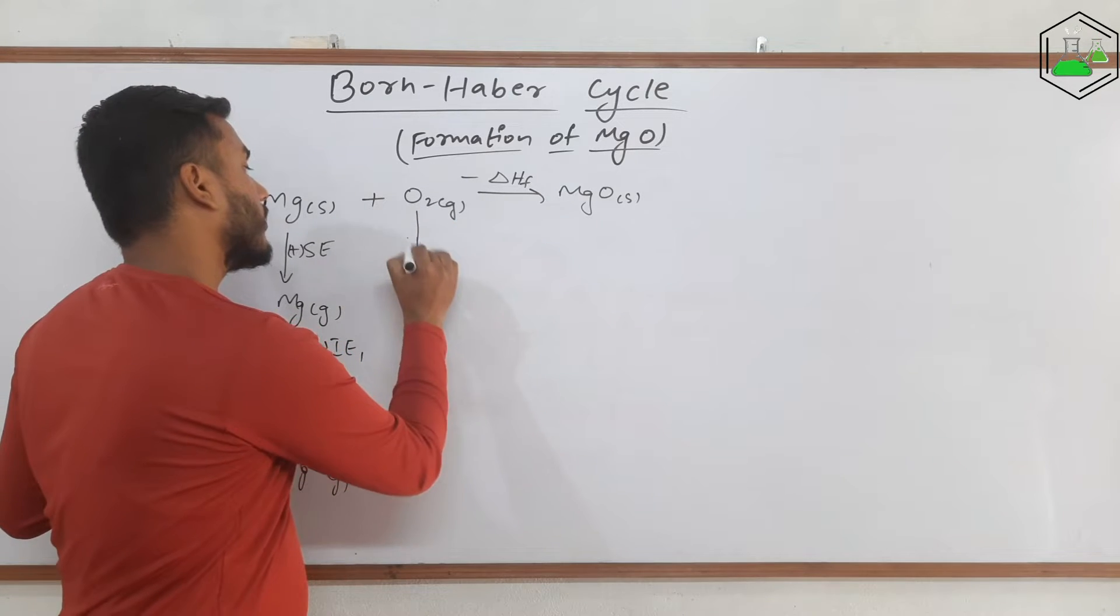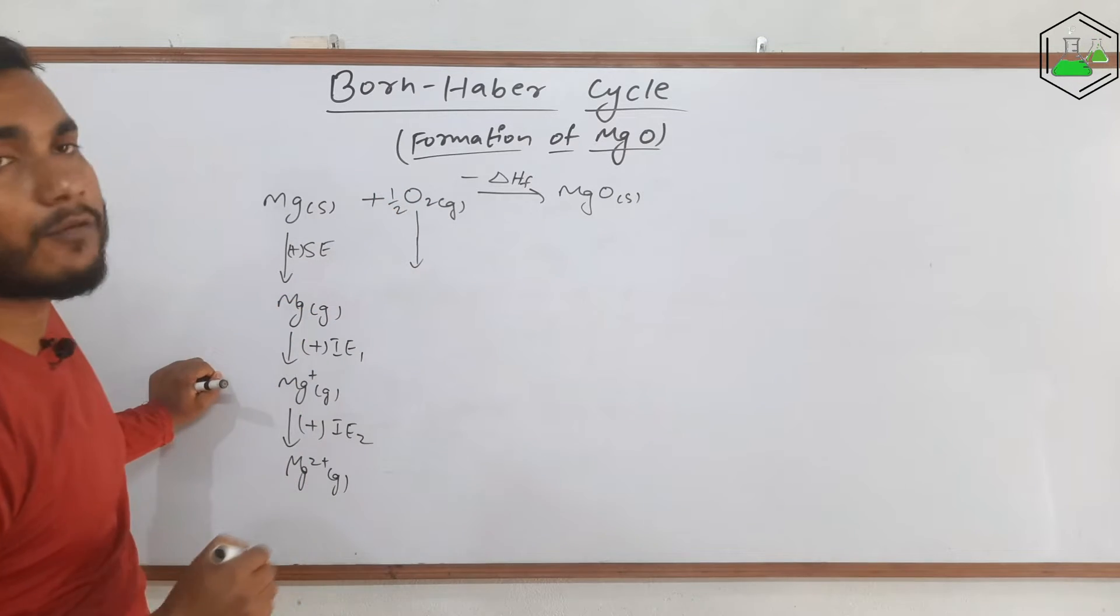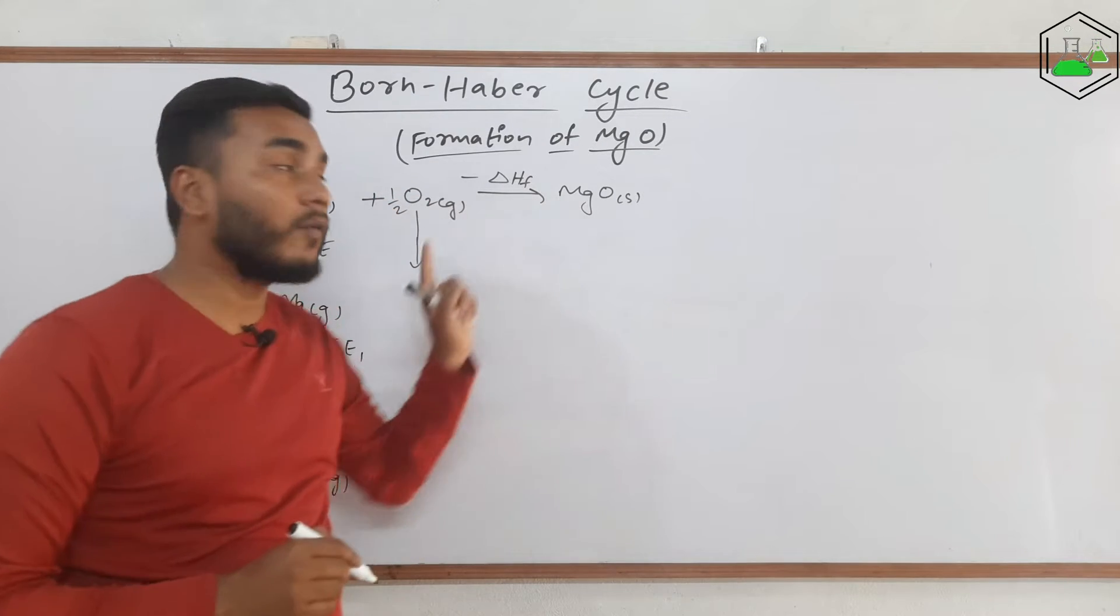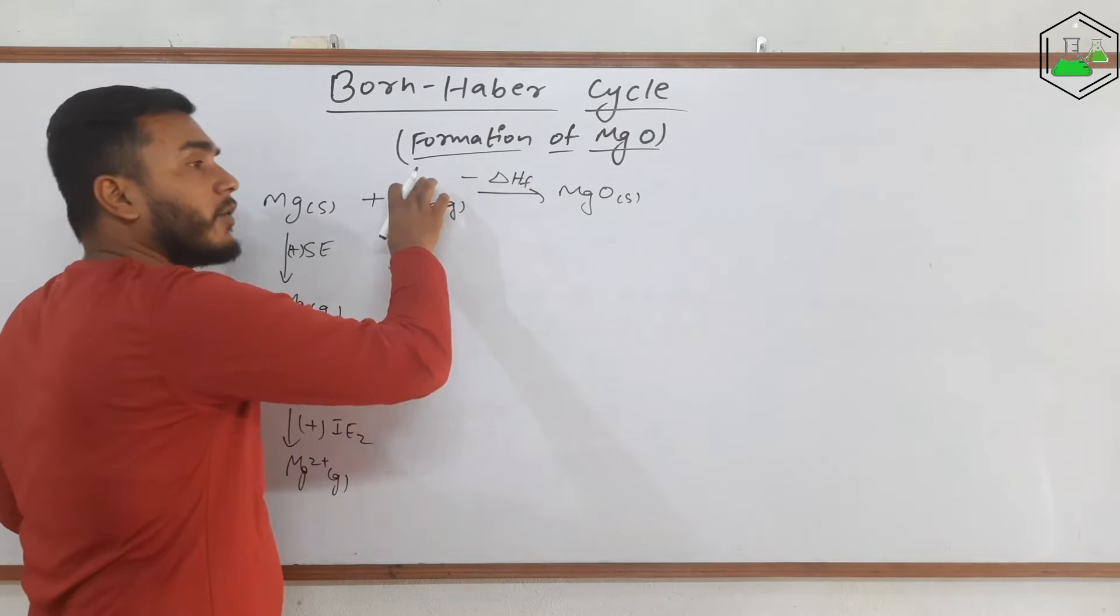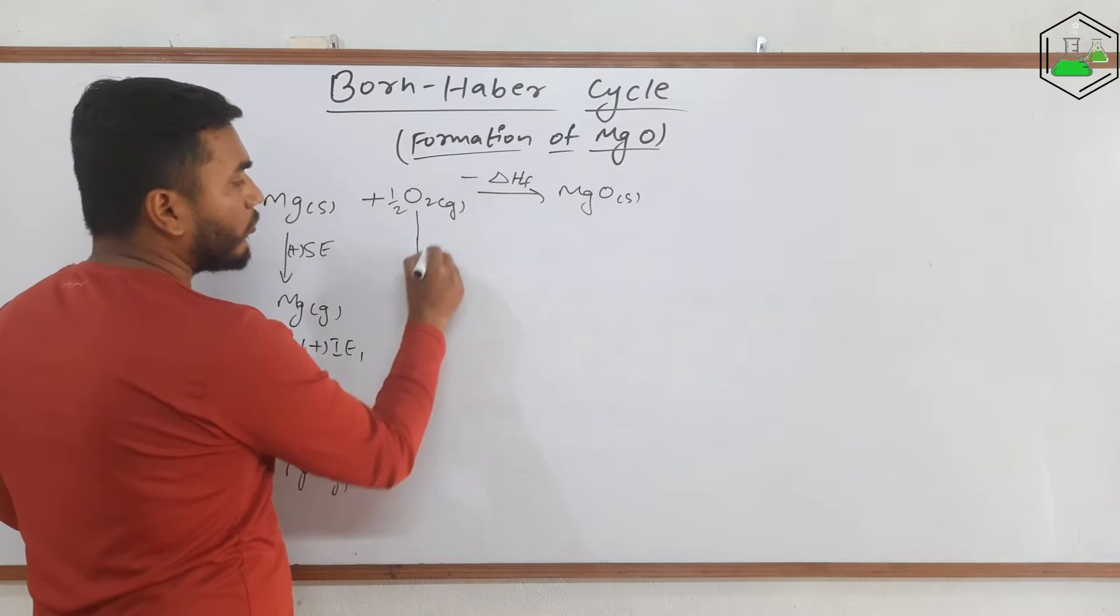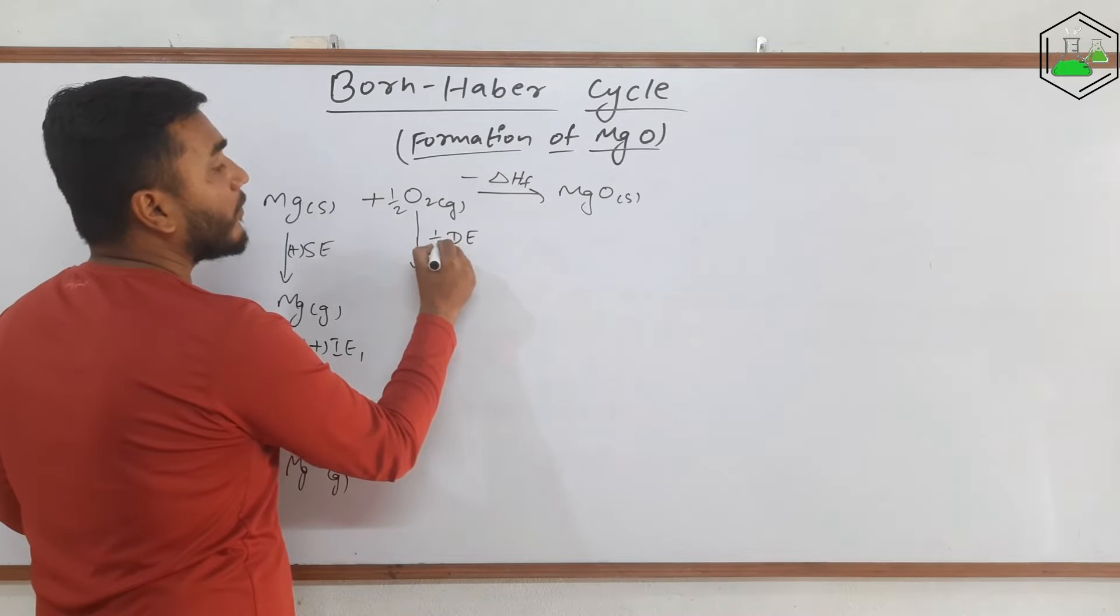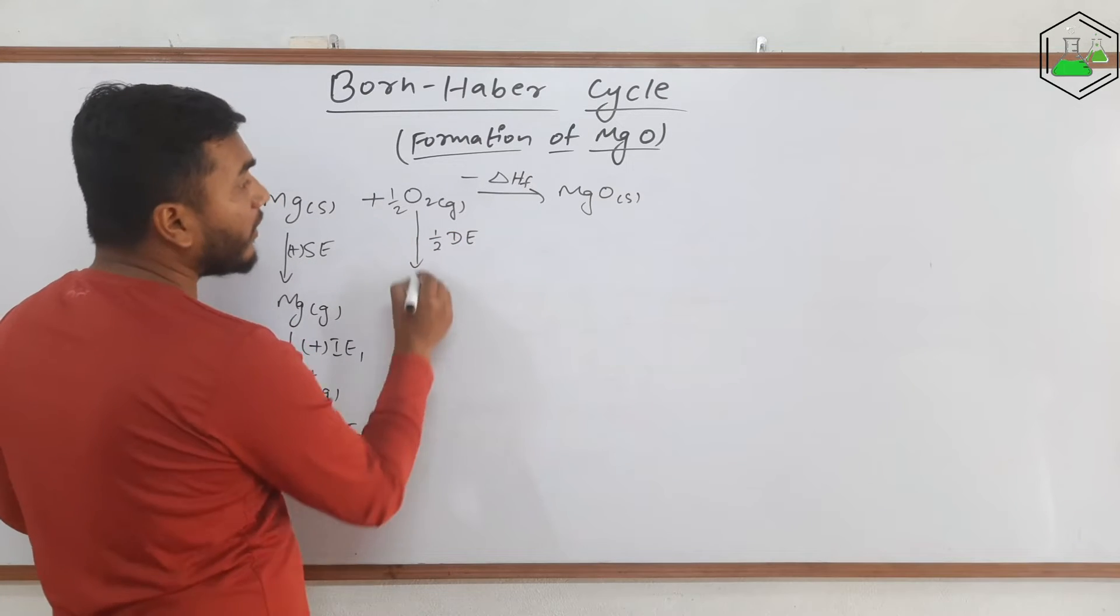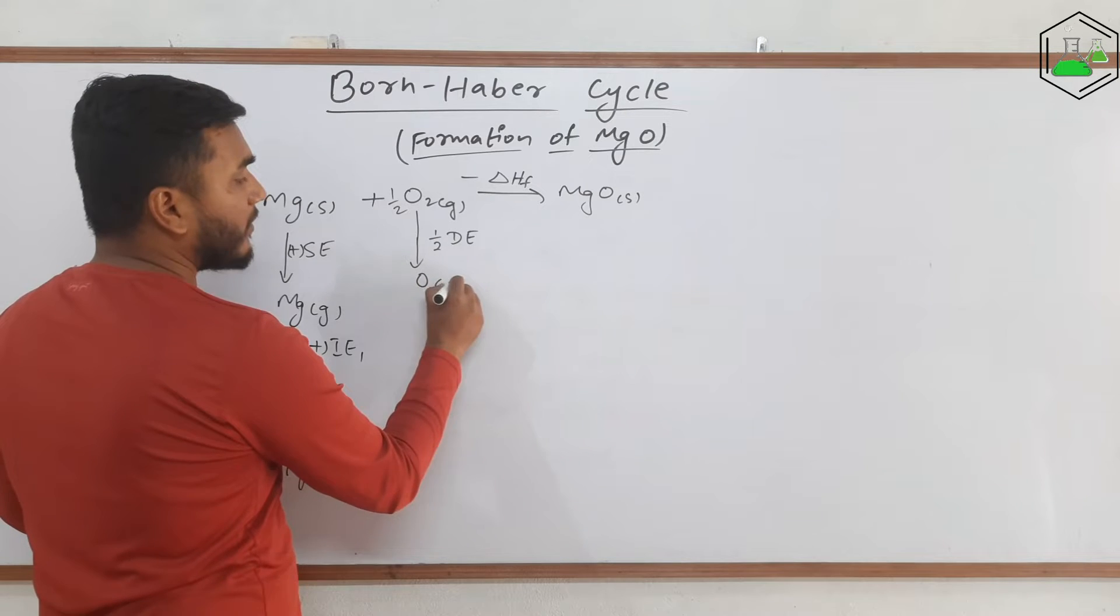Now to balance this reaction we have to put half over here. It needs to convert from diatomic form. We need to convert it into the monoatomic form. So to do that we need to provide dissociation energy and there is half written. So we will only provide half of the dissociation energy and it will convert to O in gaseous state.